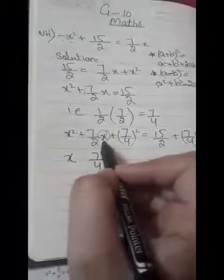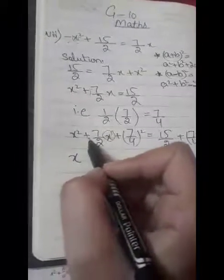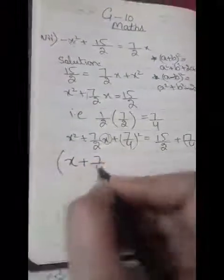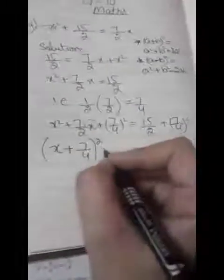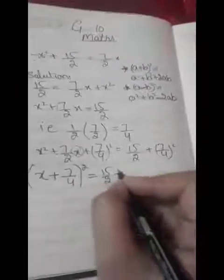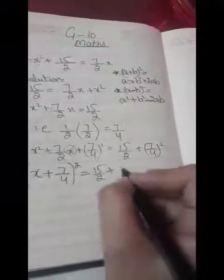So we put the plus sign and get (x + 7/4)² equals 15/2 plus (7/4)².